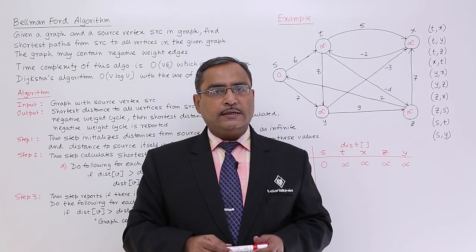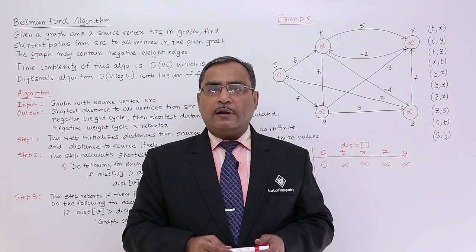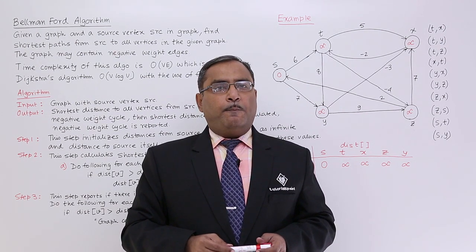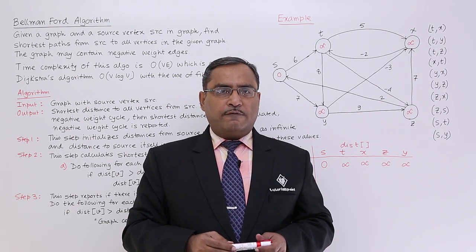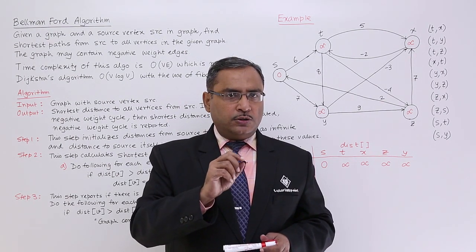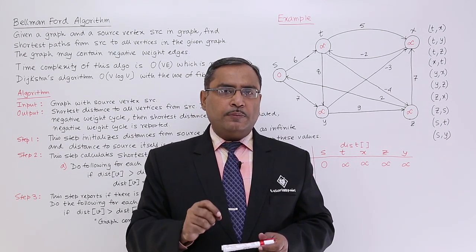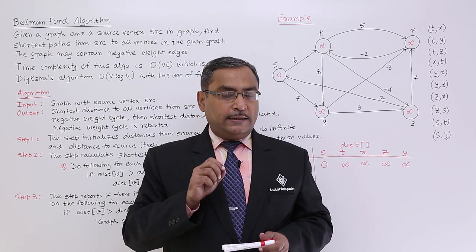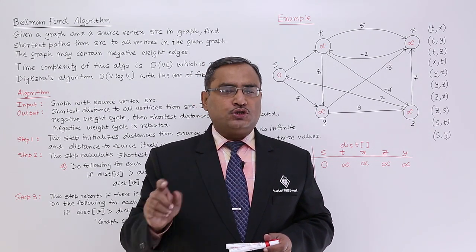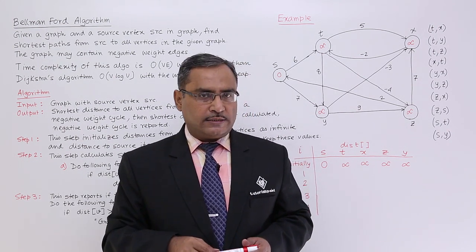In this session we are discussing a very important graph theory algorithm: the Bellman-Ford algorithm. Bellman-Ford algorithm finds the shortest distance from a source vertex to all other vertices. That means it requires one source vertex as input and then finds all shortest paths to all other vertices.